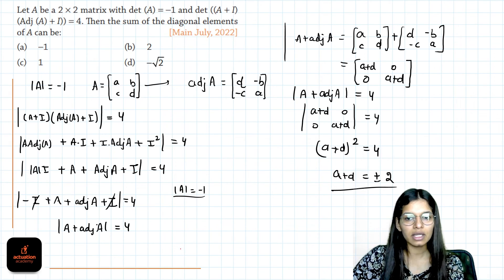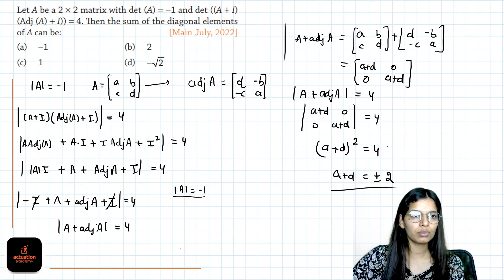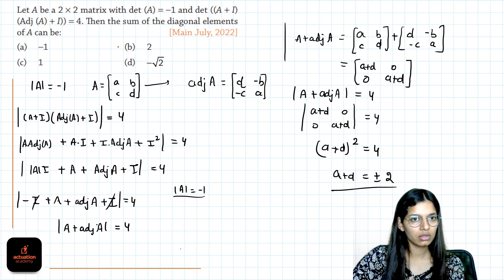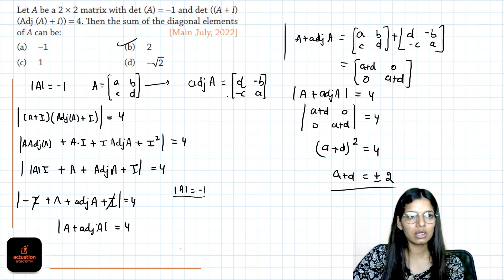So sum of diagonal entries can be plus 2 or minus 2. So, given option, 2 is the correct one.